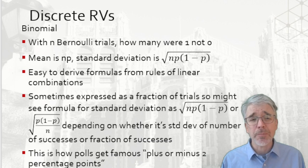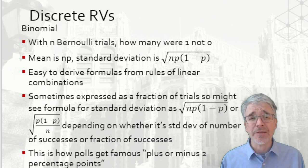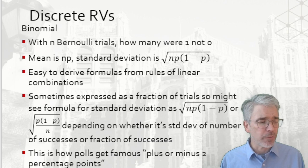With a bunch of Bernoulli trials, we get a binomial distribution recording the sum of how many were one or not zero. The mean of that is n times p, where the standard deviation is the square root of n times p times one minus p. Those are easy to derive from the rules of linear combinations.